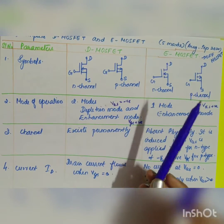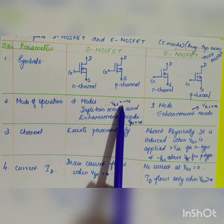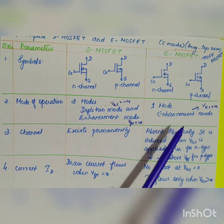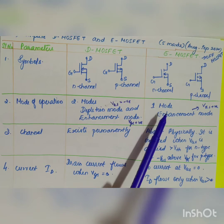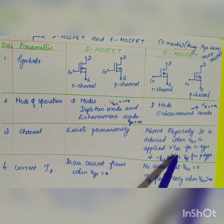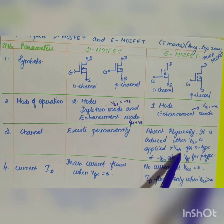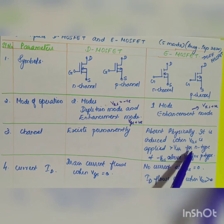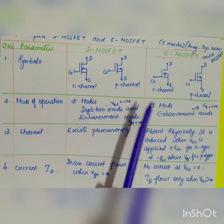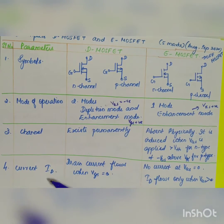The third difference is regarding the channel. The channel is permanently present in the Depletion MOSFET, whereas the channel is absent in the Enhancement MOSFET — it is only induced when the applied VGS is greater than the threshold voltage VT. That is the difference between Depletion and Enhancement MOSFET in terms of the channel.